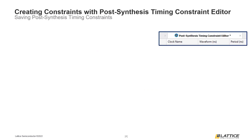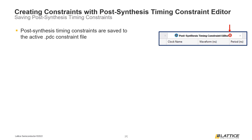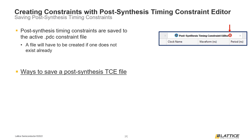Once new post-synthesis timing constraints have been added, an asterisk will appear next to the post-synthesis timing constraint editor tab if users have not already saved their new constraints. Post-synthesis timing constraints created using the TCE tool are saved to the active PDC post-synthesis constraint file for a project's implementation. If there is not already a post-synthesis constraint file, users will be prompted to create a new file when saving their post-synthesis constraints. There are three ways to save any generated post-synthesis timing constraints.